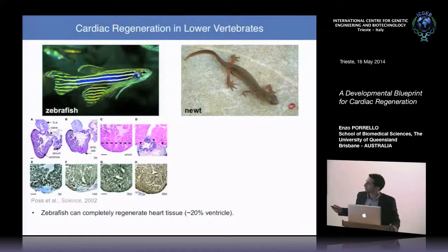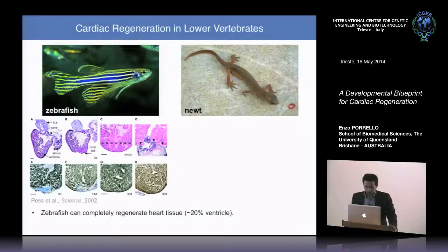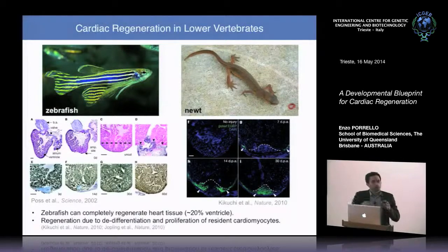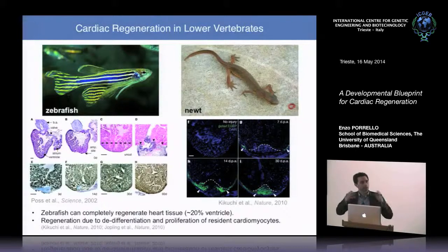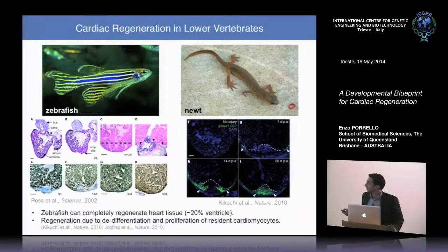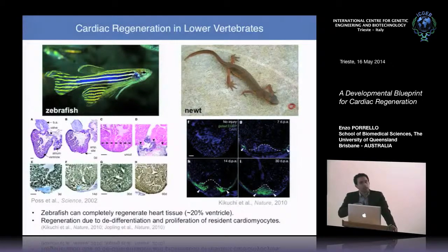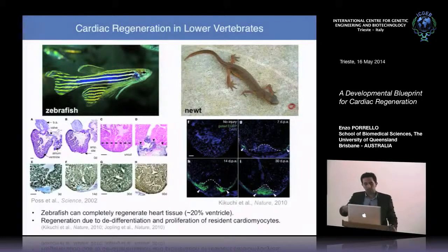This regenerative process involved initial blood clot formation, extensive fibrin and extracellular matrix deposition, and rapid myocardial expansion. The cellular source was initially thought to be epicardial stem cells, but more recent genetic lineage tracing from Ken Poss's and Juan Belmonte's labs suggest the vast majority of regenerated cardiomyocytes derive from pre-existing cardiomyocytes that proliferate following injury, rather than stem cell differentiation.